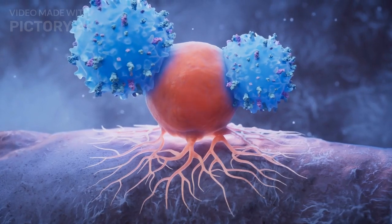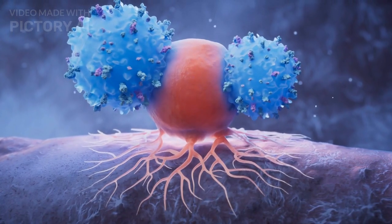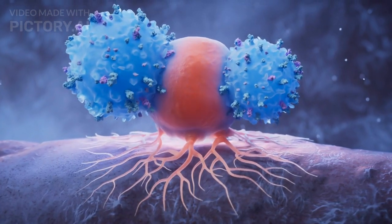4. Agglutination: Antibodies can also clump antigens together, making it easier for immune cells to engulf and destroy them.